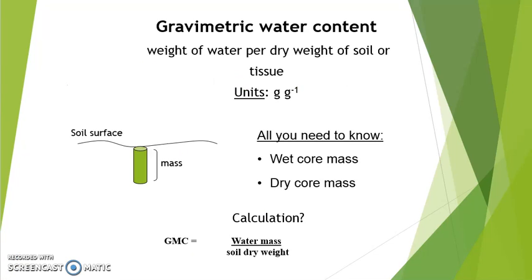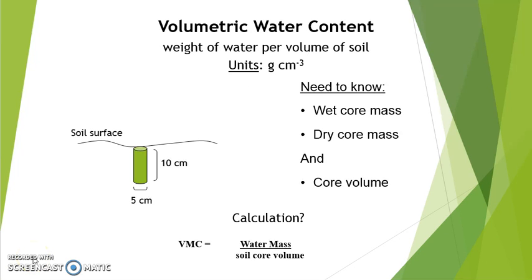Gravimetric water content — the weight of water per dry weight of soil — is calculated by dividing water mass by soil dry weight. To calculate water mass, we need to know the wet and dry weight of the soil. Volumetric water content is the weight of water per volume of soil, calculated by dividing water mass by soil core volume. We need to know the volume of soil collected to calculate volumetric water content.